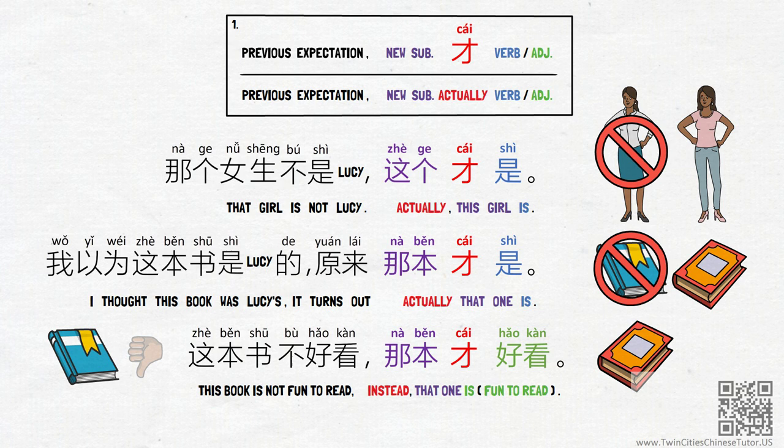Again, 才 in this case is only used to emphasize the new subject. It doesn't work if we are bringing up a new object of the sentence.